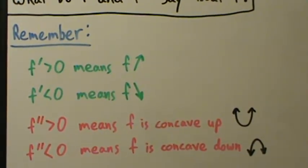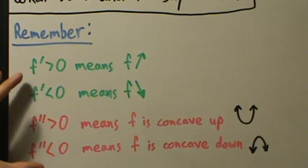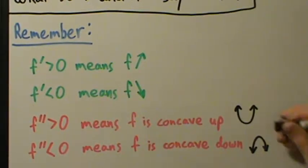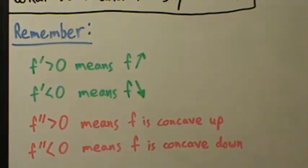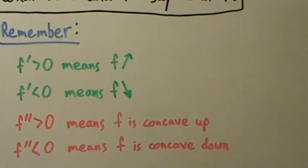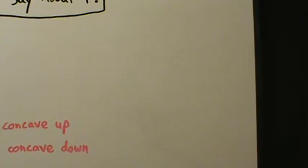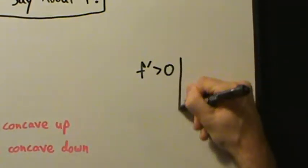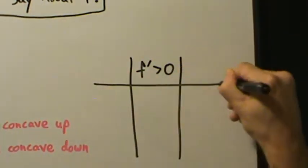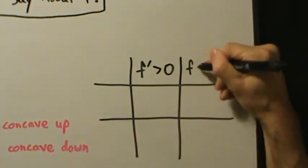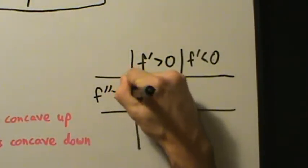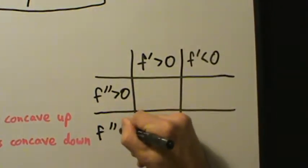We'll see some more complicated examples in the next few videos and work through some problems using this. It's really important to keep these in mind, but just memorizing them straight up might be difficult. So there is a chart we can make. We'll set up columns for f prime greater than zero and f prime less than zero, and rows for f double prime greater than zero and f double prime less than zero.